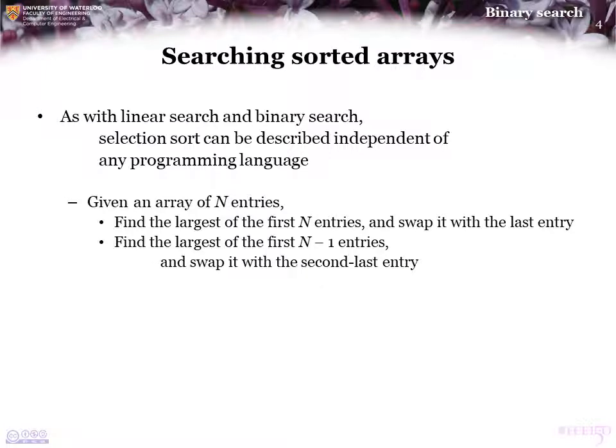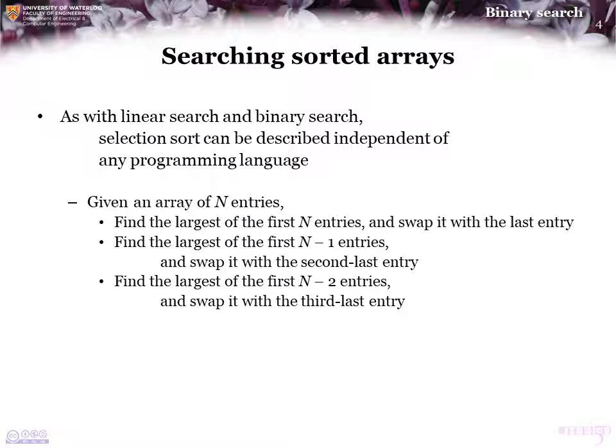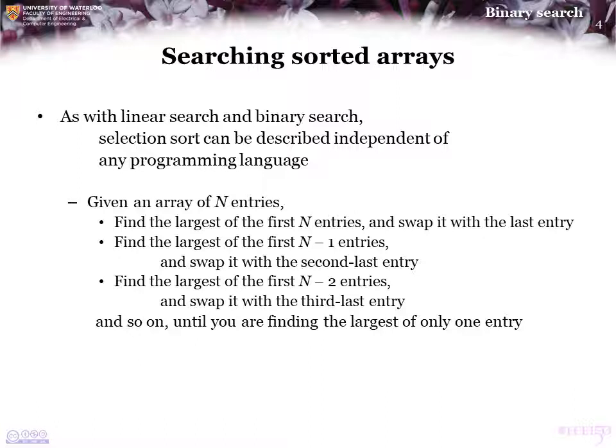Next, find the largest entry in the first n-1 entries, and swap that with the second-last entry. That places the second-largest entry in the second-last position. Next, find the largest entry of the first n-2 entries, and swap that entry with the third-last entry, placing the third-largest entry in the third-last position. You keep on doing this until you only have one entry to inspect, but that will end up being the smallest entry anyway, so we will be finished.